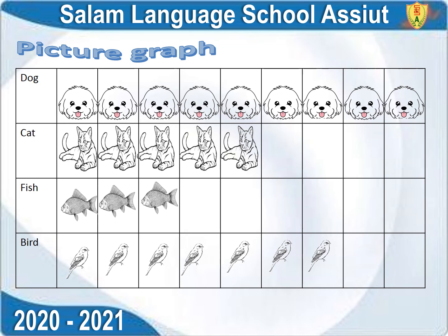Can you count with me how many students choose dogs as their favorite animals? Nine students. Can you count with me how many students choose birds as their favorite animals? Seven students.